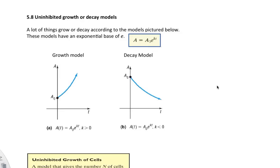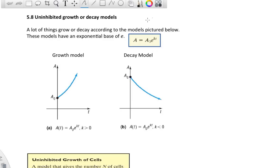Section 5.8: Uninhibited Growth or Decay. Exponential growth happens a lot in nature, and those models are usually based on an exponential base of e. We can see the base right there, and here's one way to represent it: A equals A-sub-zero times e to the kt.